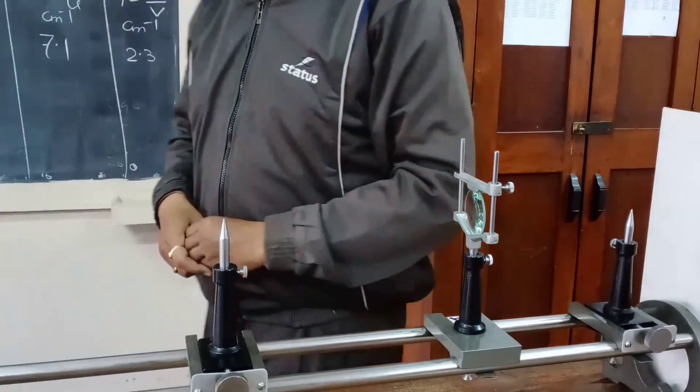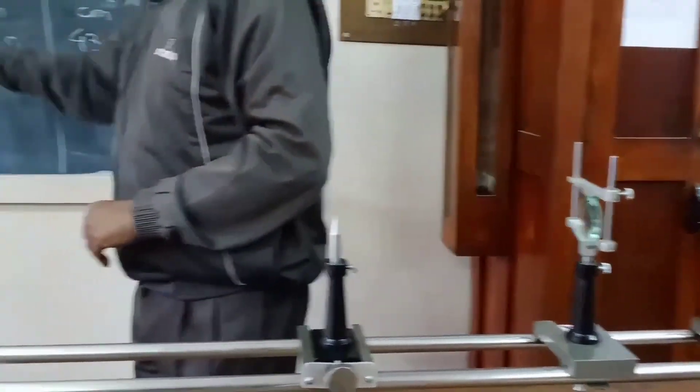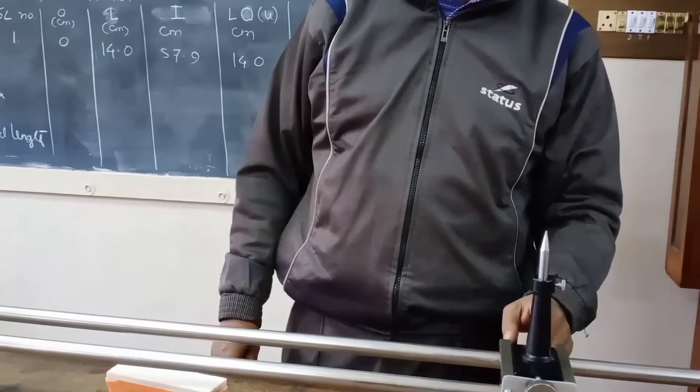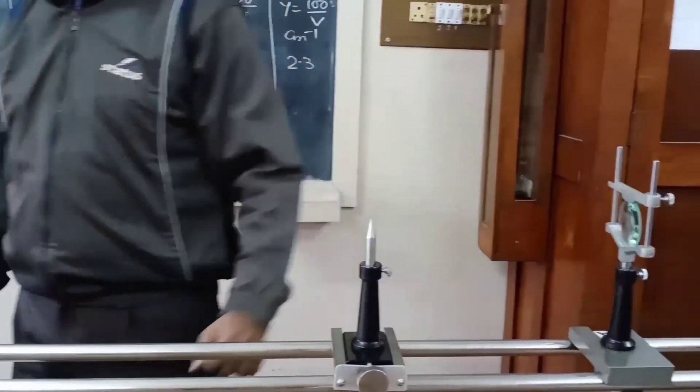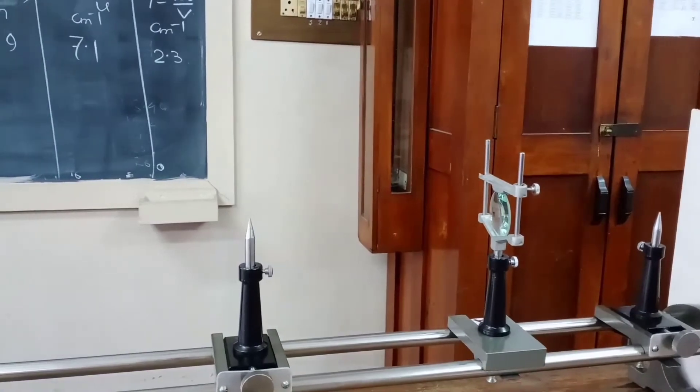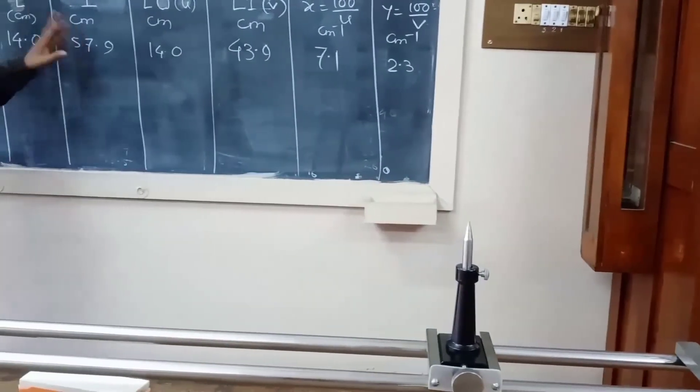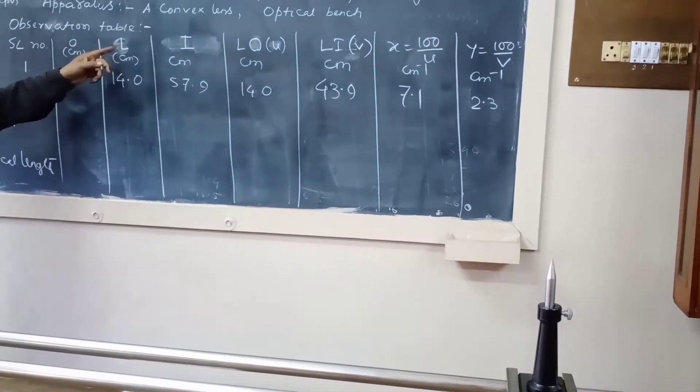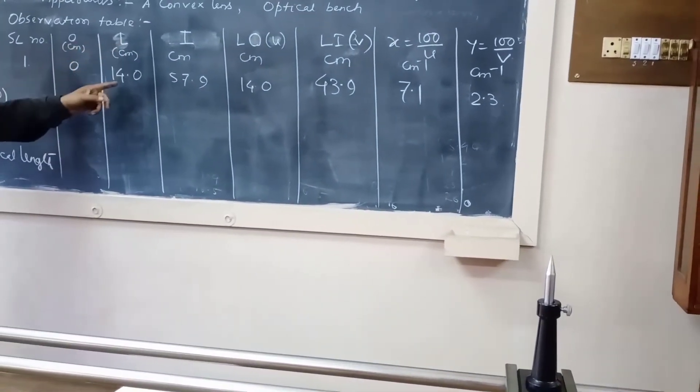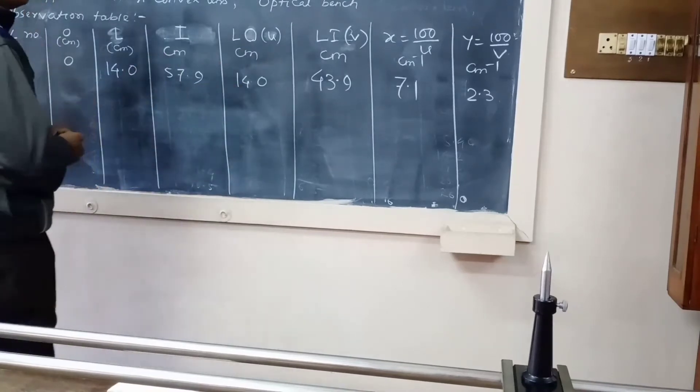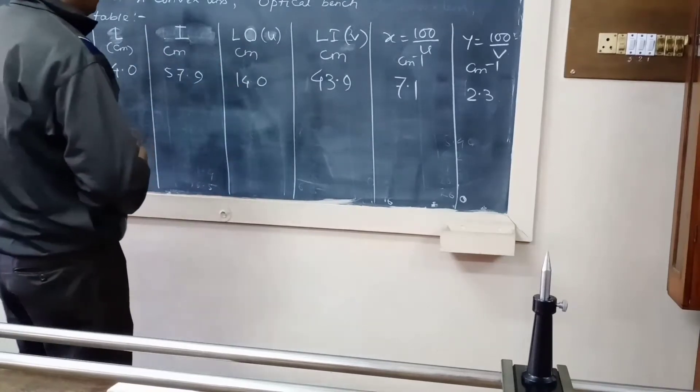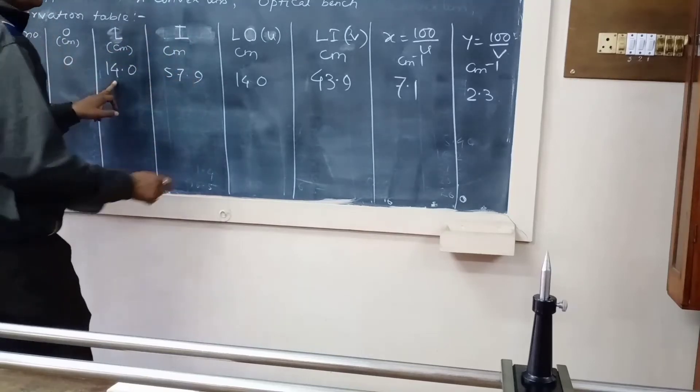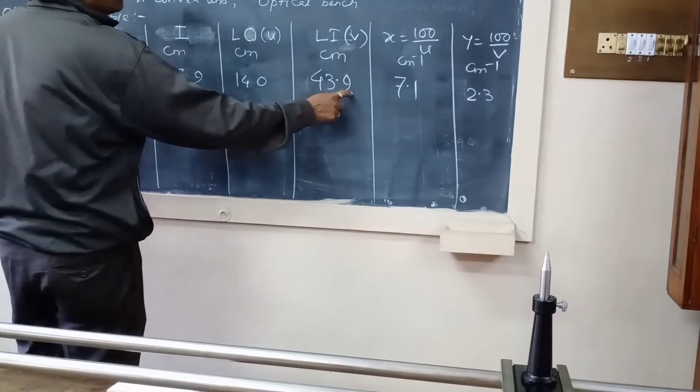You have to measure I. I means what is the position of this image pin that you have to note down. Here, the position of image pin is 57.9 cm. So what is L-O? Distance between L and O means 14 minus 0, that is 14 cm. Distance between I and L which is 57.9 minus 14 which is coming 43.9 cm.